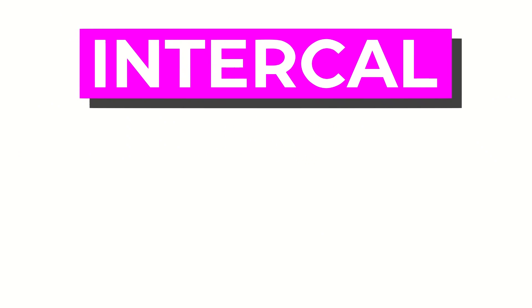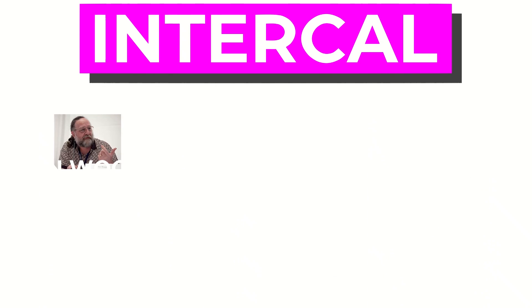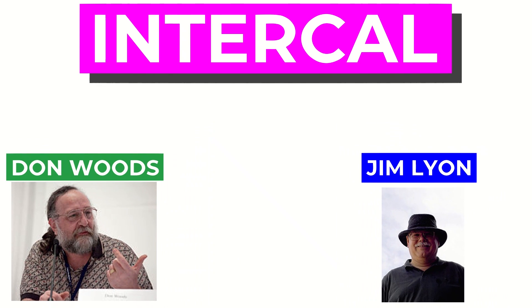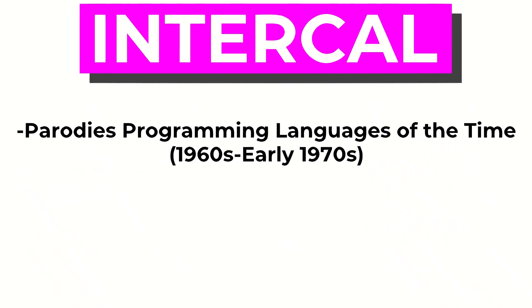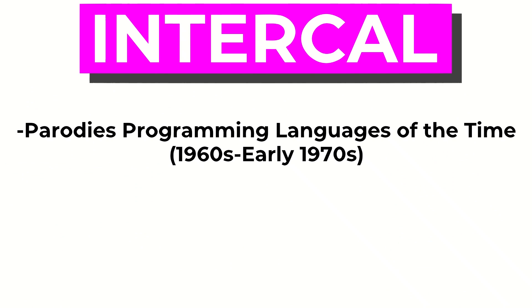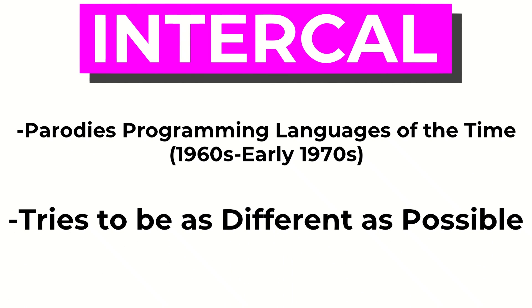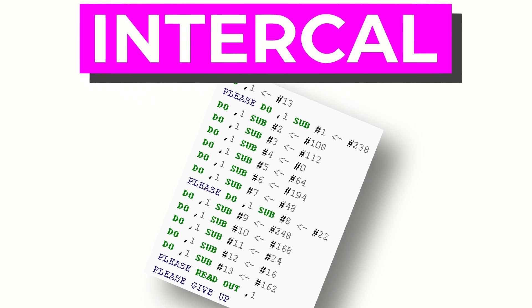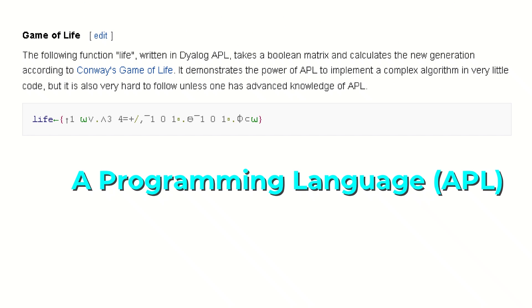Intercal, short for Compiler Language with No Pronounceable Acronym, is an esoteric programming language that was designed in 1972 by two college students, Don Woods and Jim Lyon. Intercal was designed to both parody the programming languages of the time while being completely different from them. The end result was an unreadable, tedious mess — which, I guess, means it isn't all that different from the programming languages that came before it.